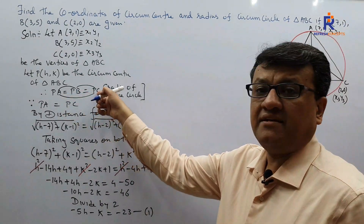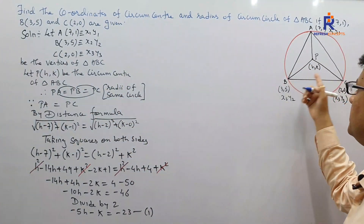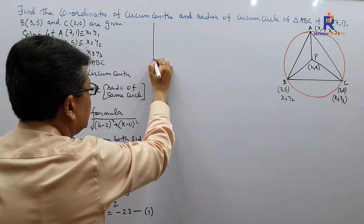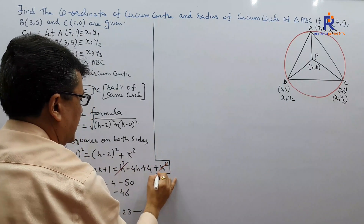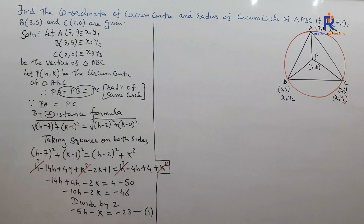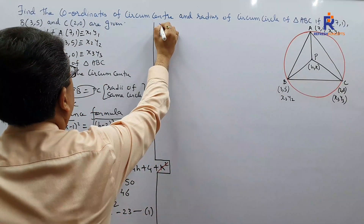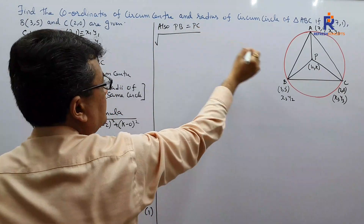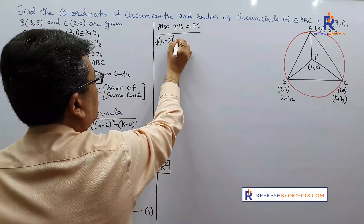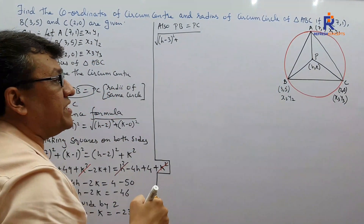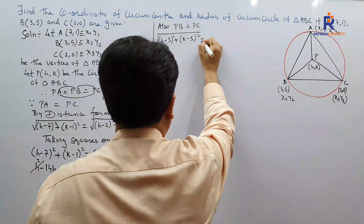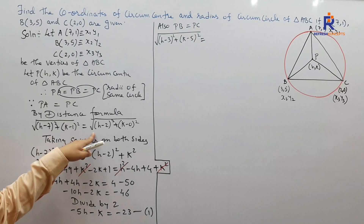We have used PA = PC. Now we take PB = PC. Since PB = PC, by the distance formula: √[(h−3)² + (k−5)²] = √[(h−2)² + (k−0)²]. We already know the expression for PC from before, so simply write down the same thing on the right-hand side.